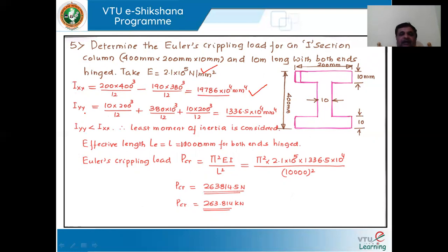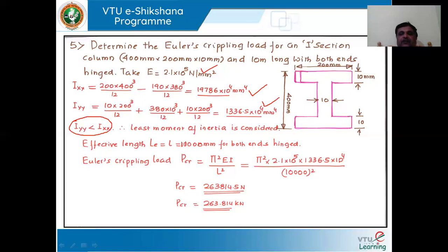Similarly, moment of inertia along the y-axis: 10 into 200 cubed by 12, plus 10 into 200 cubed by 12, plus 380 into 10 cubed by 12, plus 10 into 200 cubed by 12. We get both values and compare. The least moment of inertia is considered; Iyy is less than Ixx, so we take the value of Iyy. Effective length equals actual length since both ends are hinged. The crippling load PCR equals pi squared EI by Le squared. Substituting pi squared, E equal to 2.1 into 10 to the power 5, I equal to 1336.5 into 10 to the power 4, and effective length 10,000 squared, the crippling load is 263,814.5 Newtons or 263.8 kilonewtons.